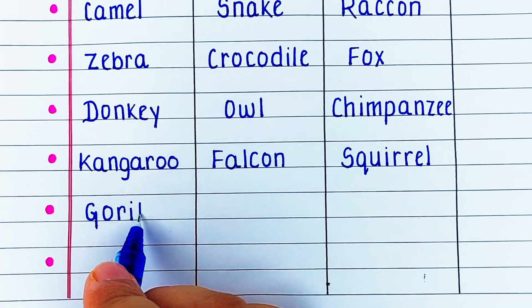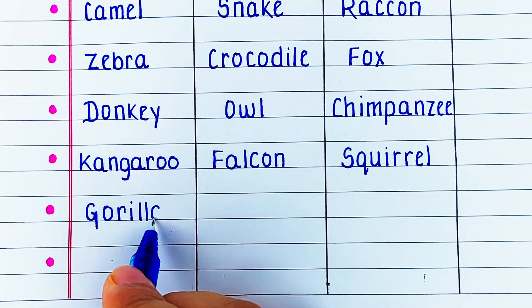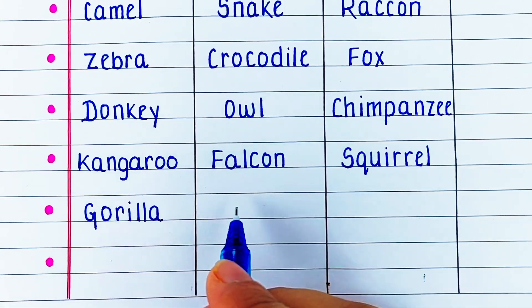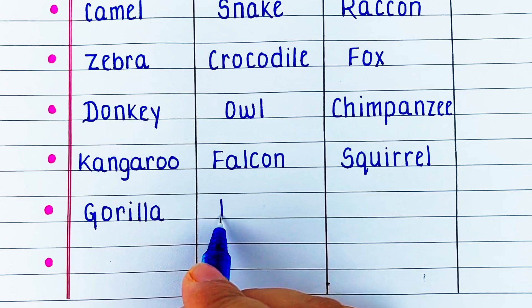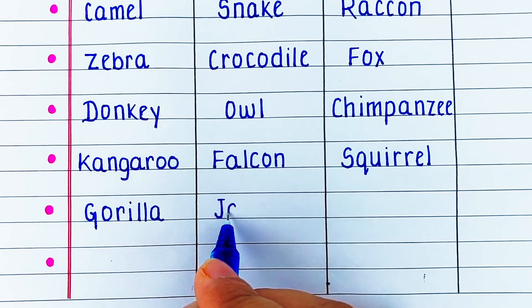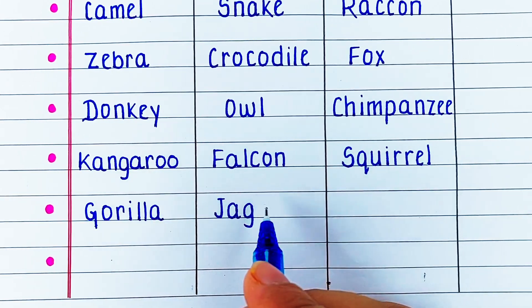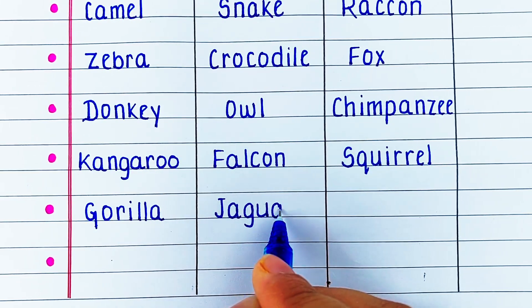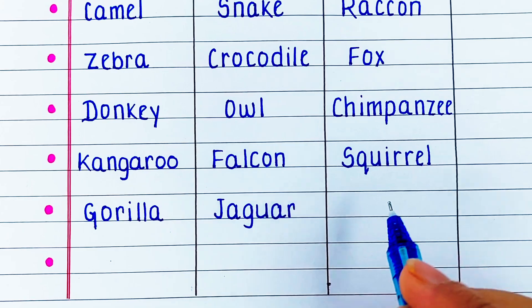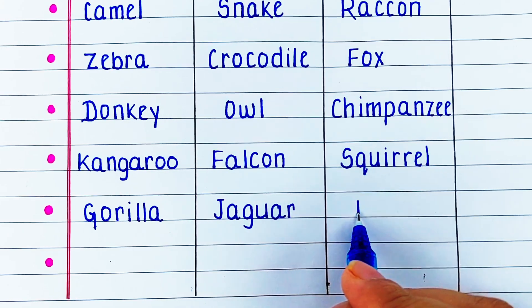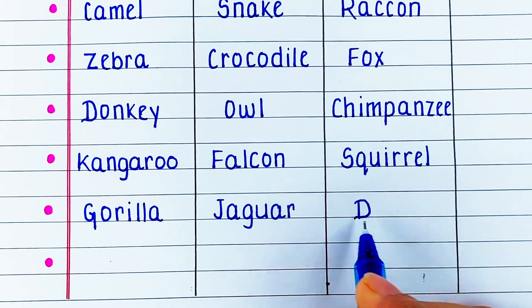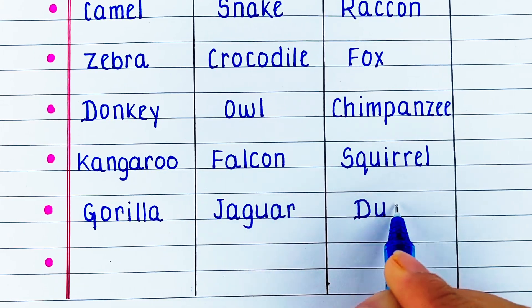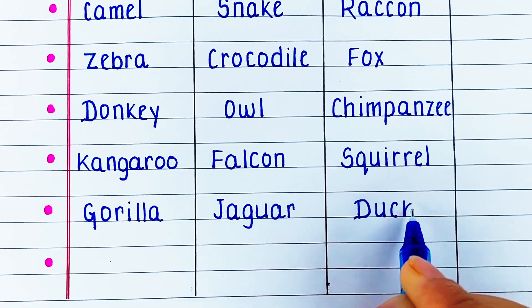Next we have gorilla as herbivore, jaguar as carnivore, and duck as omnivore.